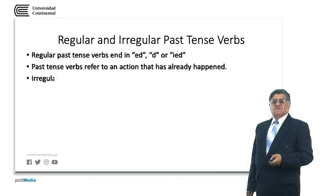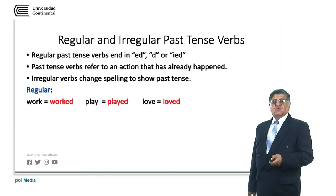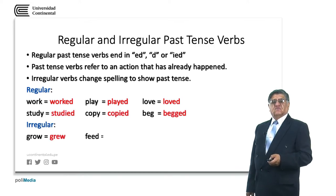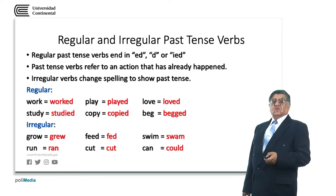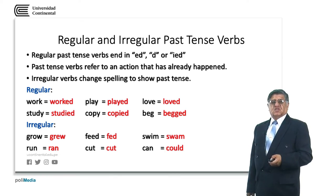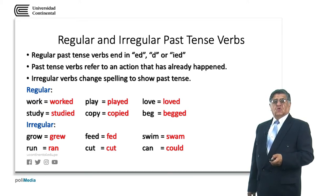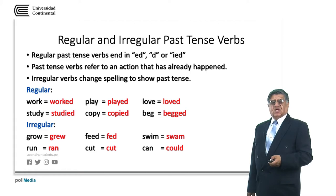In the past tense we have regular and irregular. Regular past tense verbs will end in -ed, -d, or -ied according to the form they have in the present. Past tense verbs give information about actions that have already finished in the past. All irregular verbs change the spelling in the past tense. Regular examples: work, worked; study, studied; play, played; copy, copied; love, loved; beg, begged. We are doubling the g in beg. We are changing the y in study to i — studied. Copy becomes copied with an i.